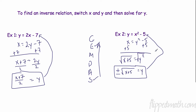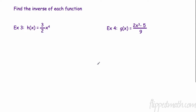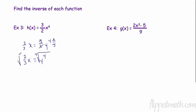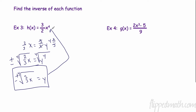Remember H(x) is just Y. After swapping, X equals (3/2)Y to the fourth. Multiply both sides by the reciprocal two-thirds — that's easier than dividing. Now we have (2/3)X equals Y to the fourth. The opposite of raising to the fourth power is taking the fourth root, and since four is even, it's plus or minus. So plus or minus the fourth root of (two-thirds times X) equals Y — that is our inverse function.